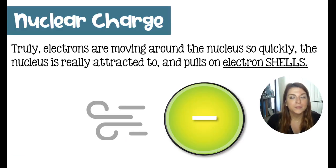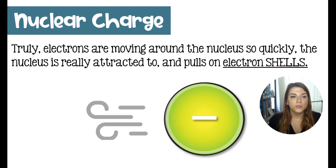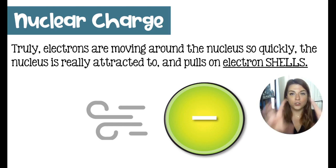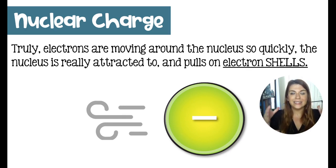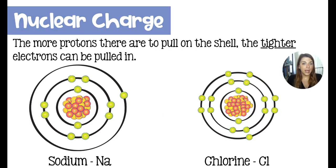This is where chemistry gets a little weird. Electrons are matter, but sometimes they have the behavior of energy. Let's say they're moving just short of the speed of light. The nucleus is trying to attract a single electron and pull it in, but this electron is moving so quickly that the nucleus can't grab onto an individual electron. So instead, the nucleus is attracted to the entirety of an electron shell.